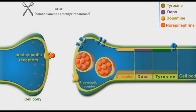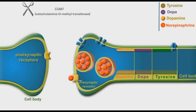Some of the norepinephrine molecules traverse back and bind to presynaptic receptors to stimulate cascades of reactions that result in the inhibition of release of norepinephrine molecules from their storage vesicles.